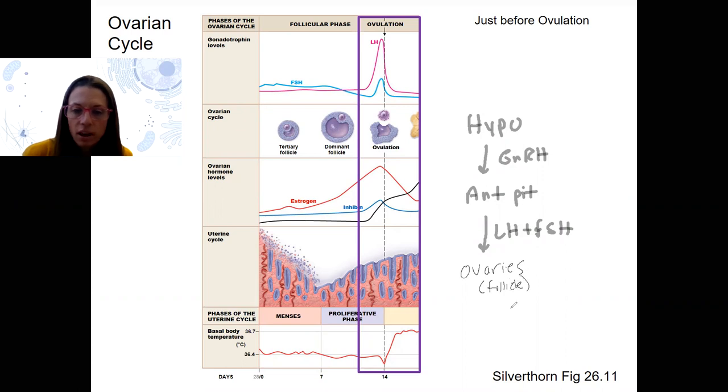And now this follicle is producing super, super, super high estrogen. That's right here, right? You can see that. We're just before ovulation. That super, super, super high estrogen is going to result in a switch from negative feedback to positive feedback.